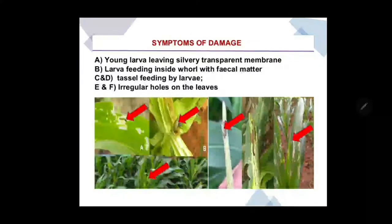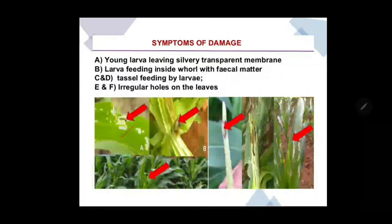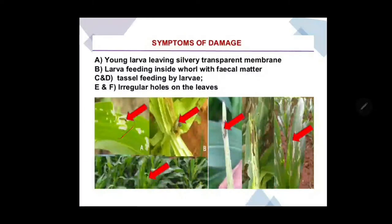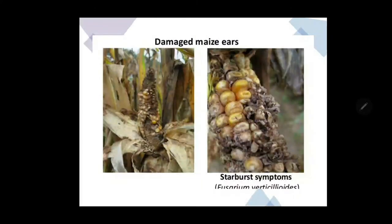The nature of damage: young larvae leave a silvery transparent membrane, and young larvae feed inside the whorl with fecal matter. Initially it feeds on leaves and scrapes the leaf surface, leaving behind a thin film. Then it enters the growing point and feeds inside while leaving fecal material outside. It then devours the entire stem and foliage, causing dead heart. It also affects reproductive parts, feeding on them and making the grain unconsumable, deteriorating quality and reducing production.